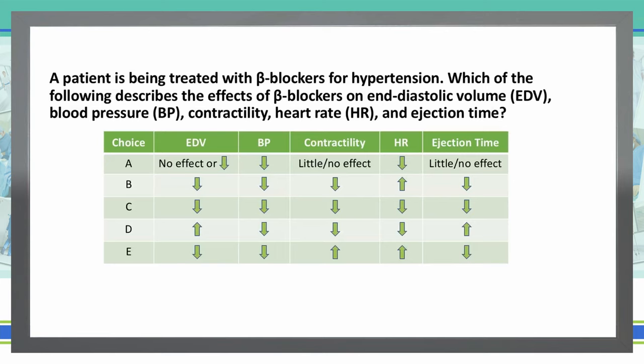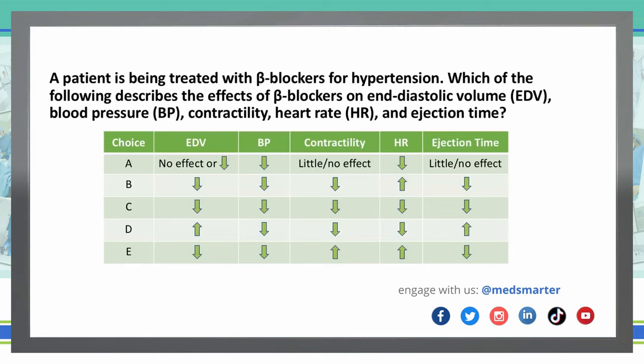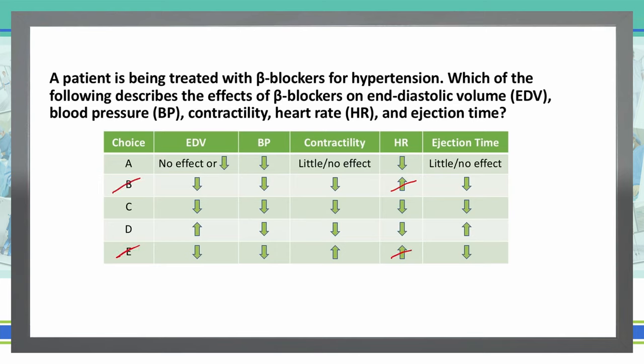This question is just asking us to know what the effects of a particular medication are. Don't get overwhelmed by seeing this chart — this is a fairly straightforward question. We all know that beta blockers are going to slow the heart rate, so we can mark out any answer choice that causes an increase in heart rate. B and E are going to be out because they do not fall in line with a decrease in heart rate.